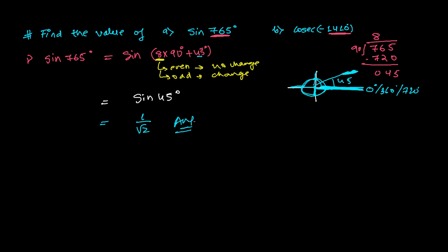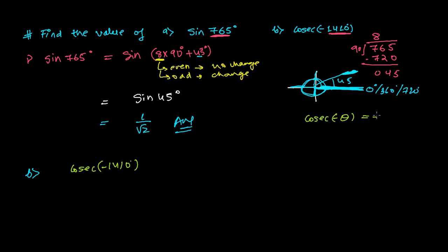Now the second question: cosec of minus 1410 degrees. First, I want to tell you that cosec of minus theta is actually minus cosec theta. So I am going to rewrite cosec of minus 1410 as minus cosecant of 1410 degrees.